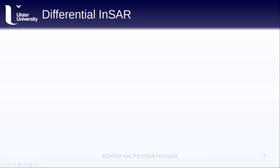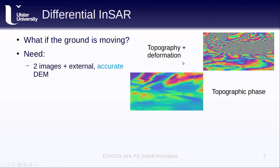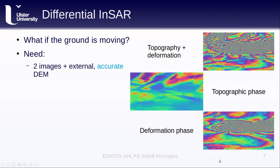So what do we do if the ground is moving? Well, in that case, our interferometric phase has two different components related to the topography and the deformation. To isolate the deformation, if we only have two images, then we need an accurate external DEM in order to estimate the topographic phase and remove it, leaving only the deformation phase. If the topography is changing, or we don't have an accurate DEM available, then we can use three or more SAR images to accomplish the same thing.